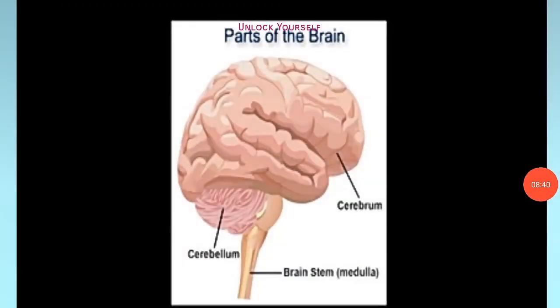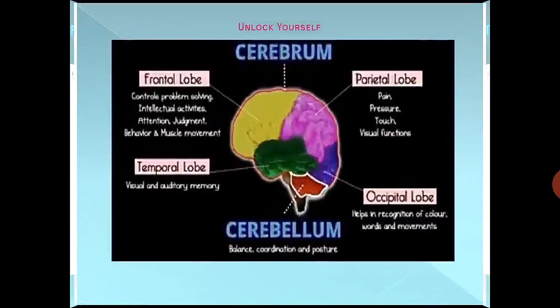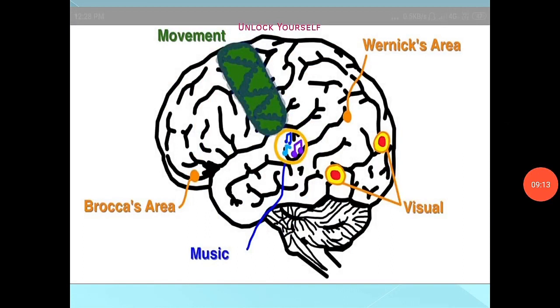The last part of the brain is the brain stem, which contains the midbrain, pons, and medulla oblongata. The midbrain is the smallest part of the brain stem, being about 2 cm in length. The medulla contains nuclei that regulate respiration, swallowing, sweating, and other vasomotor activities. That's all with the major parts and functions of the brain.